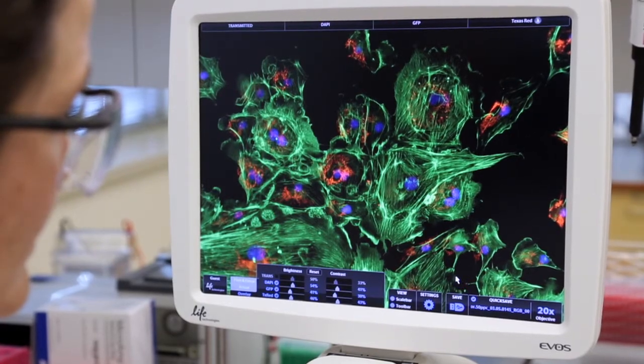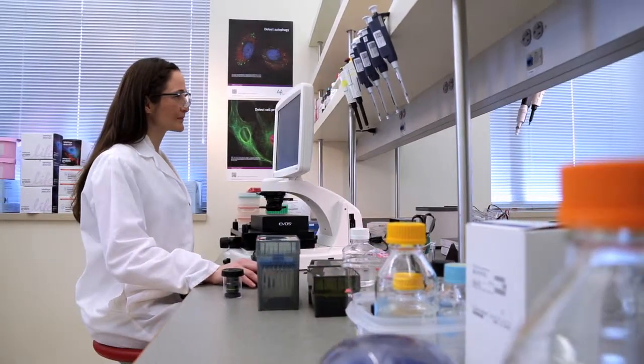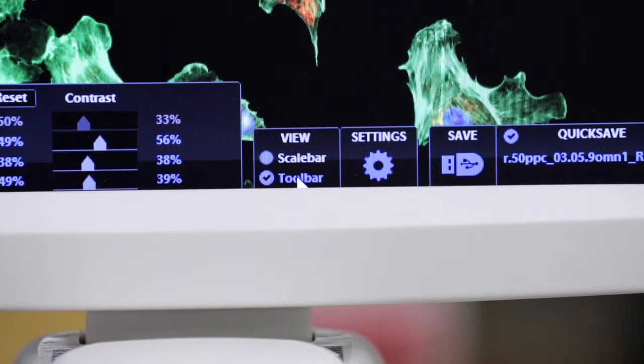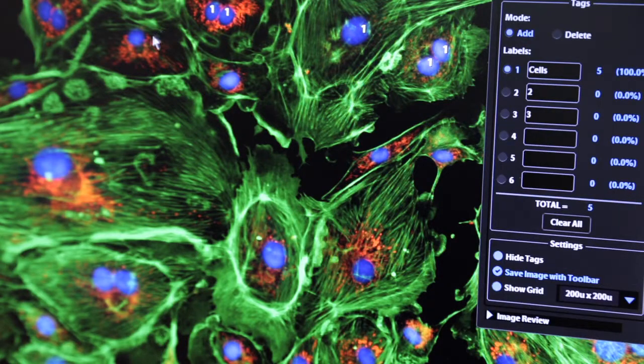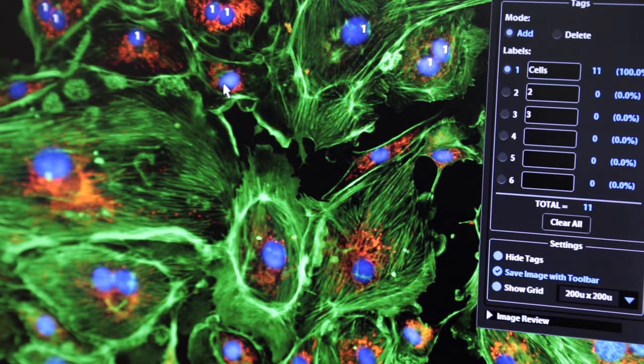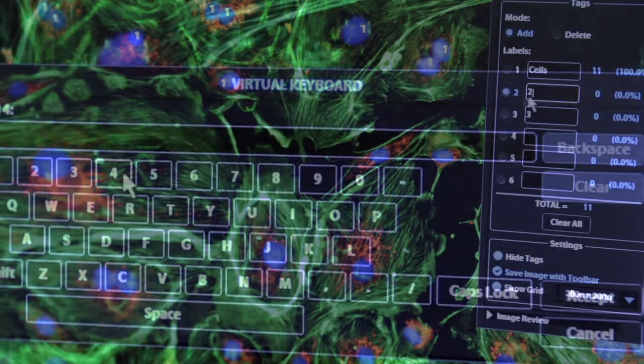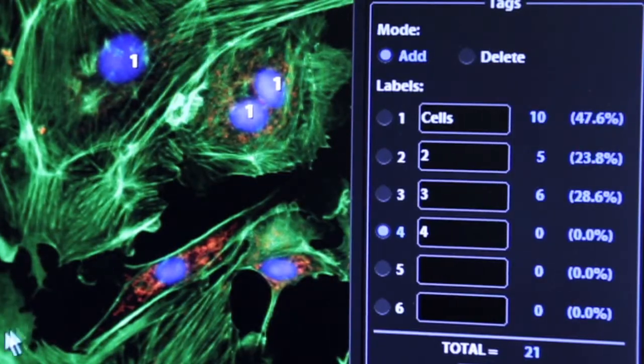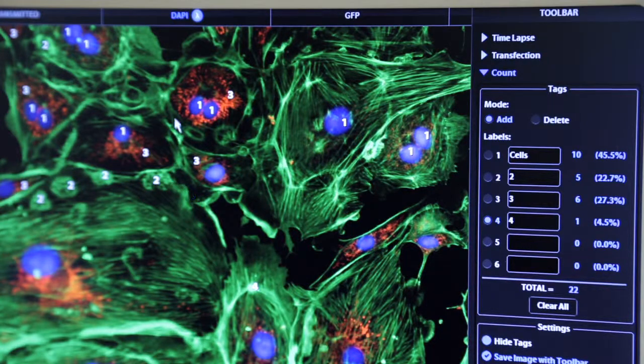The EVOS FL imaging system also has a number of advanced features to enhance user experience. The count tool streamlines cell counting by providing up to 6 self-chosen labels for each captured image on screen. As you tag items, the system will keep a running tally of counts with percentages for each label assigned. Document your results by simply saving the tagged image with the count tool displaying the totals.